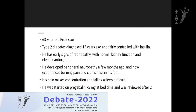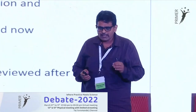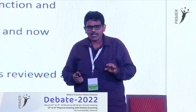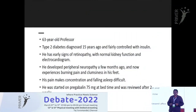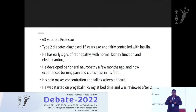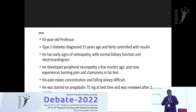The case is a 63-year-old professor with type 2 diabetes diagnosed 15 years ago, fairly controlled with insulin. He has early signs of retinopathy with normal kidney function. He developed peripheral neuropathy a few months back and experiences burning sensation and clumsiness in his foot. His pain makes concentration and falling asleep difficult. He was started on pregabalin 75 mg at night, dose was increased to 150 mg after 15 days, and he was then started on nortriptyline.